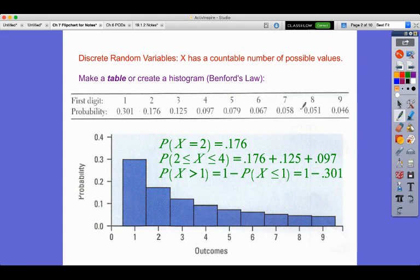This one has a little bit more information than the histogram, but what's the probability that X equals two? Notice it's using the capital letter X to denote the random variable. X equals two is 0.176. That X is between two and four, I would add these three probabilities together. That X is greater than one, I could add up all eight of those probabilities or just do one minus the probability that it's less than or equal to one. You just flip that sign.